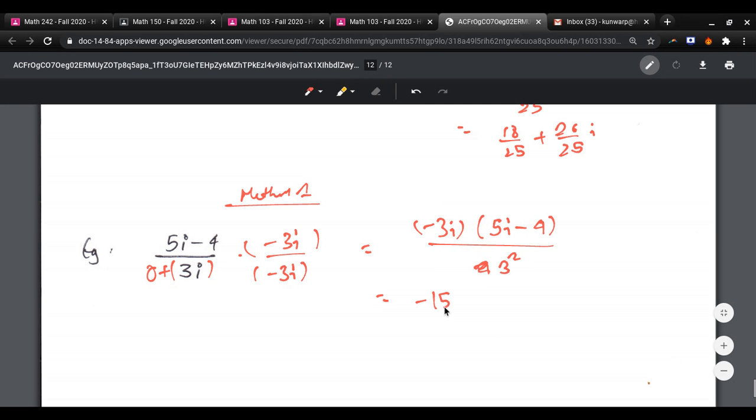Distribute, you get negative 15i squared plus 12i over 9. And that's just 15 plus 12i over 9, which is 15 over 9 plus 12 over 9i, which is further 5 over 3 plus 4 over 3i.